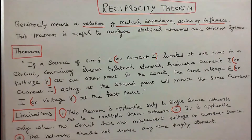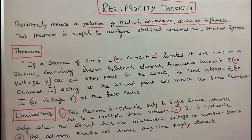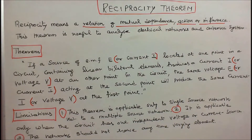This theorem states that if a source of EMF or current I located at one point in a circuit containing linear bilateral elements produces a current I or voltage V at another point in the circuit, the same voltage E or current I acting at the second point will produce the same current I or voltage V at the first point. That is the statement of the Reciprocity Theorem.